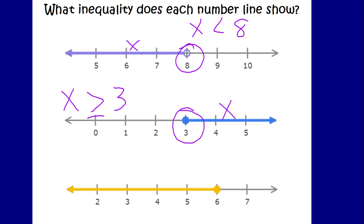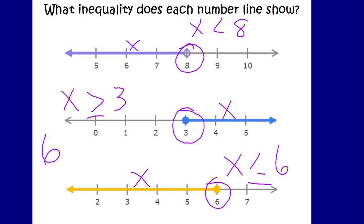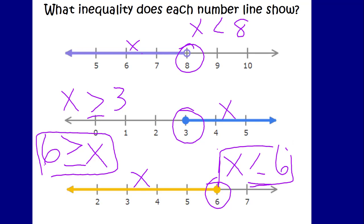For our last example, the x line goes to the left of 6, so x is going to be less than 6. Looking at the circle, it is a closed circle — it's filled in. Therefore x is also a solution, so the inequality would be x is less than or equal to 6. Remember, you can still write it the other way — we can start with the 6. Because our x value line goes to the left, 6 is the greater number, and it is equal to because it is a closed circle. So the inequality could be written two ways: 6 is greater than or equal to x, or x is less than or equal to 6. You need to be able to read and write it both ways.